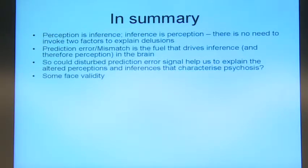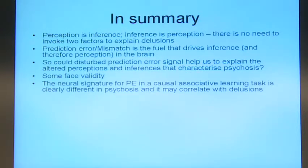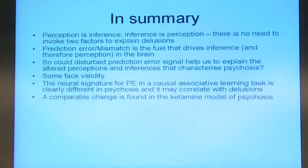If you look at the early stages of delusions, then that could be incorporated within what you would expect from disrupted prediction error. We also have observed that the neural signal for prediction error in a simple cause-associative learning task is clearly different in people with psychosis, and it also seems to correlate with their likelihood of having delusions.